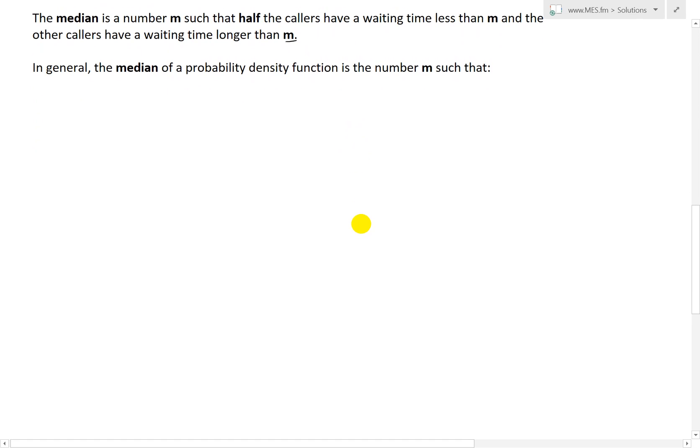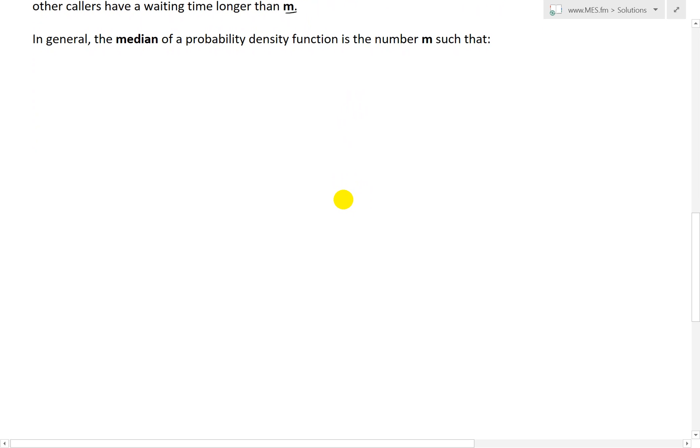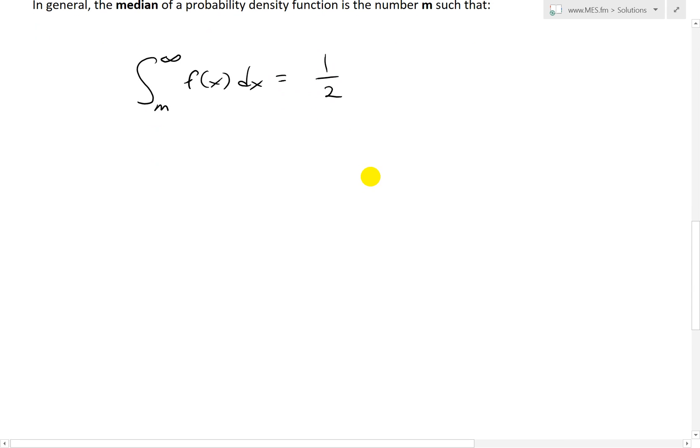So it doesn't directly depend on the time. In general, the median of a probability density function is the number m such that the integral from m to infinity of the probability density function f(x) dx equals 1 half. Or if you're looking at the left side, the integral from negative infinity to m of f(x) dx also equals 1 half.